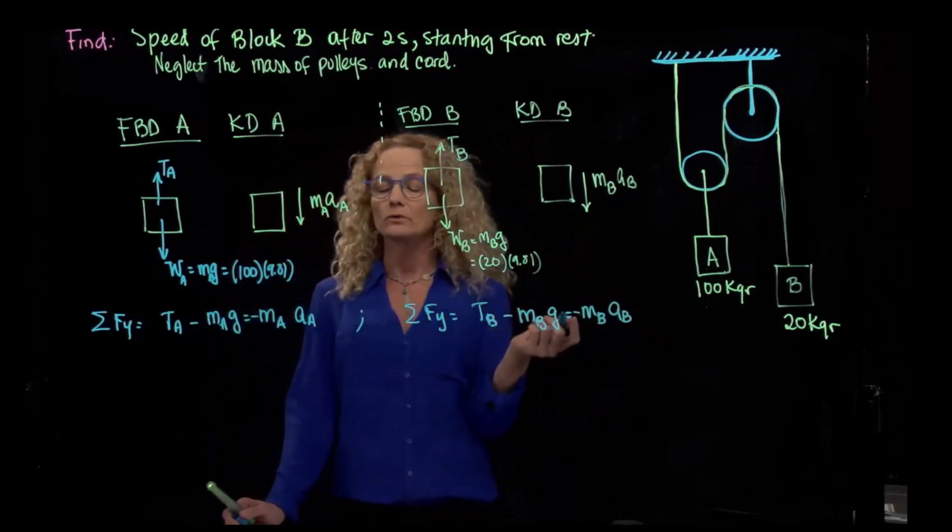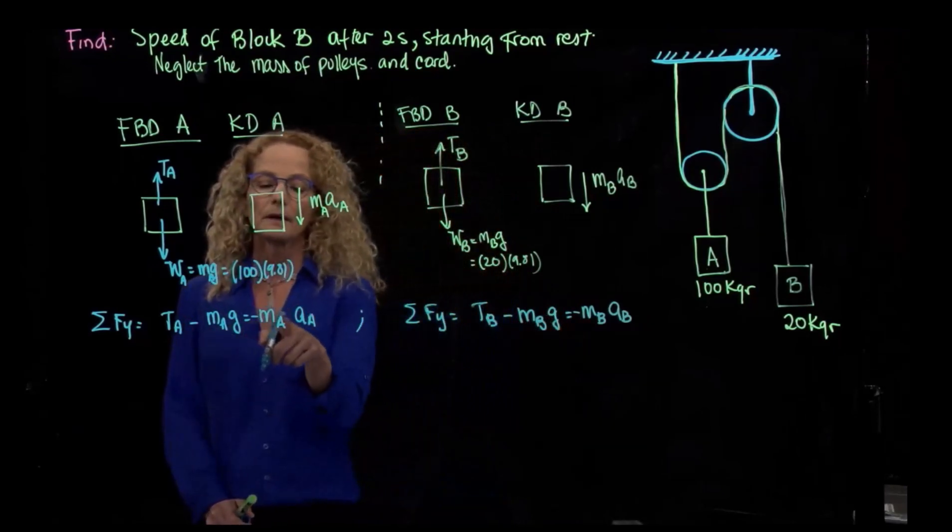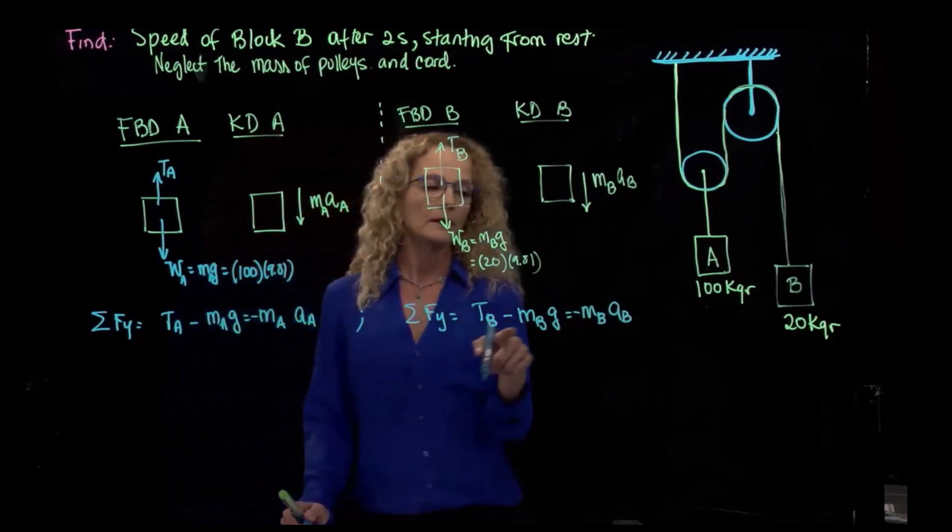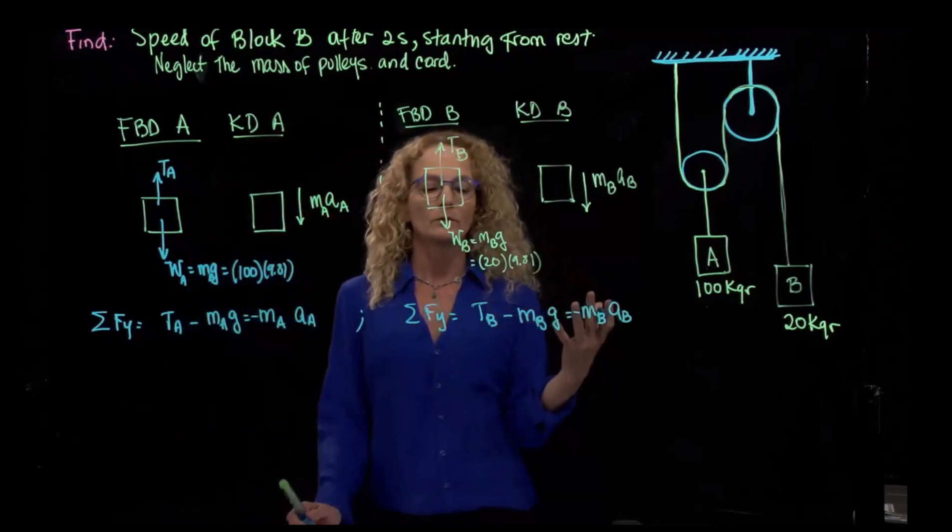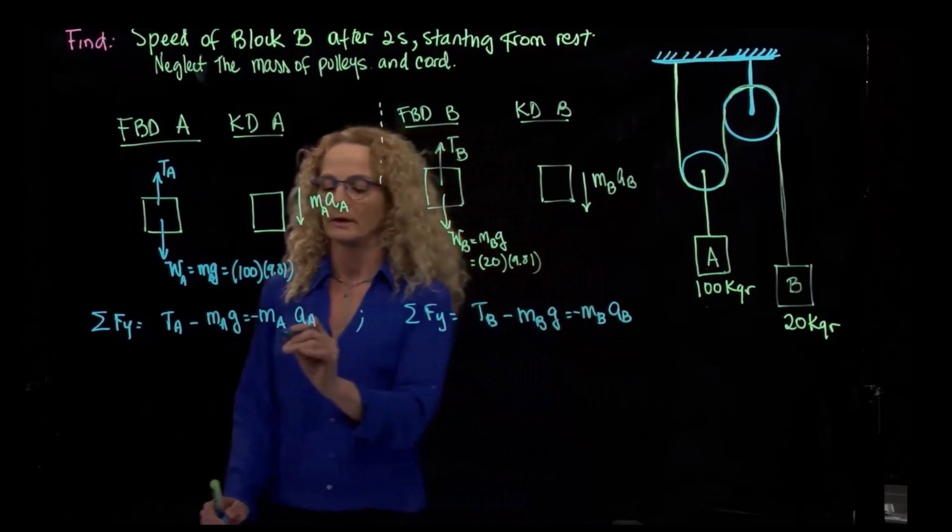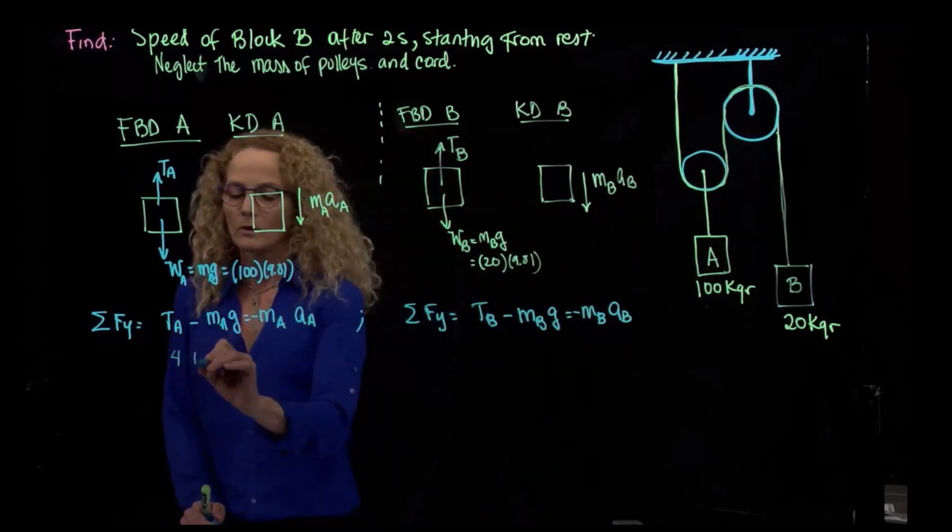But how many unknowns do I have here? I have TA, and I have AA, and I have TB, and AB. It's too many unknowns. So I have four unknowns, let me write it here, four unknowns.